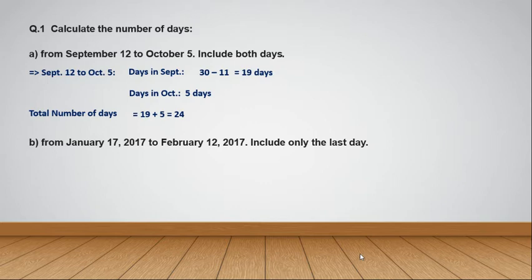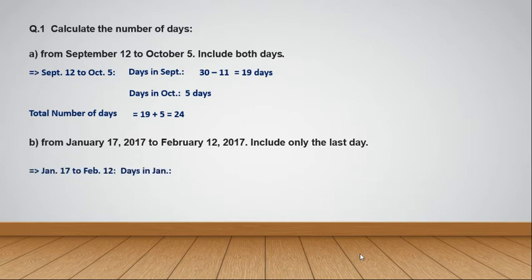Here we need to include only the last day, which means we don't have to include the starting day, that is the 17th of January. There are 31 days in January, and we need to subtract the first 17 days because we start from the 17th of January and don't include the first day. So 31 minus 17 equals 14 days.